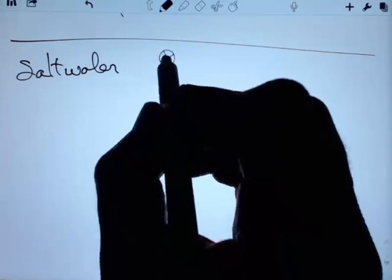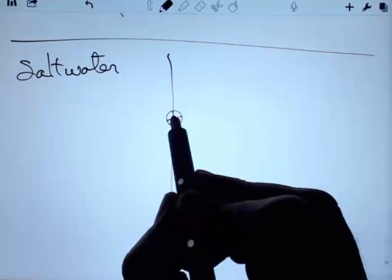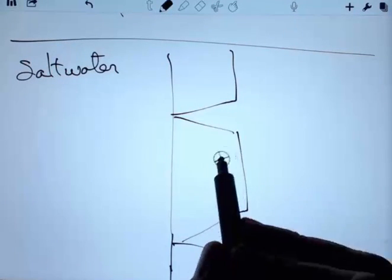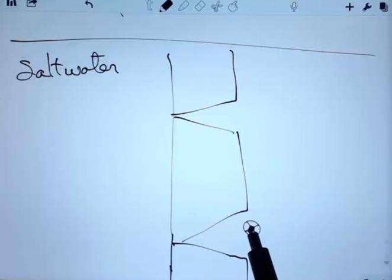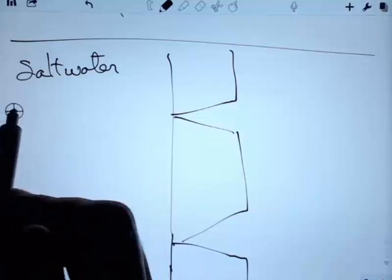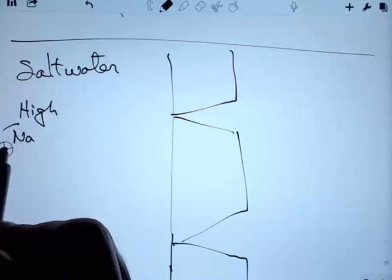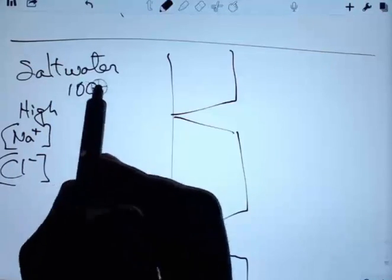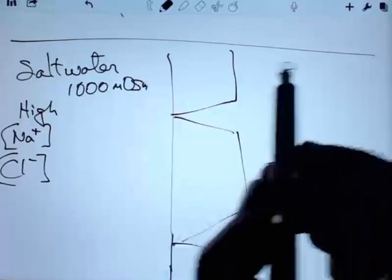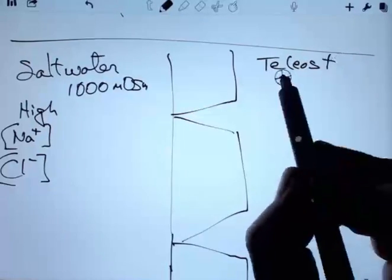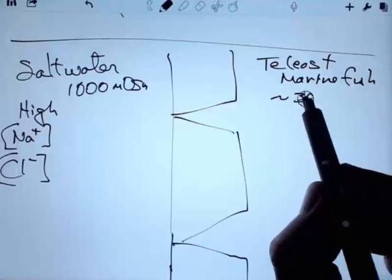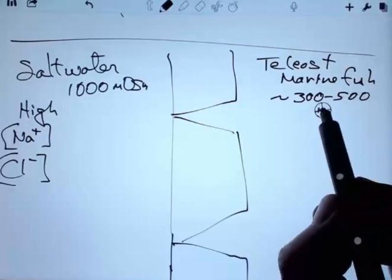In saltwater, a marine fish has a different problem. Here's an epithelial layer, some cells, and a gap between the cells. The outside of the cell is high in sodium and chloride and other ions, but sodium and chloride are the two major ones, at around 1,000 milliosmoles, whereas the inside of a teleost fish, a typical marine fish like a tuna, would have maybe in the range of 300 to 500 milliosmoles.